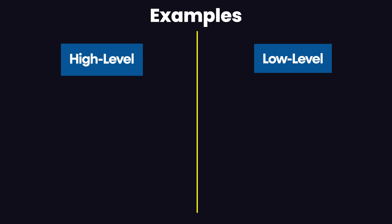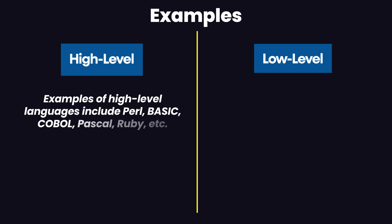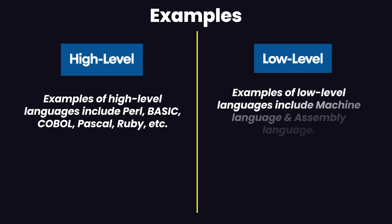Some examples of high level languages include Perl, BASIC, COBOL, Pascal, Ruby, JavaScript, Node, and all modern-day languages. Examples of low level languages include machine language and assembly language. Those were the main differences between high level languages and low level programming languages.